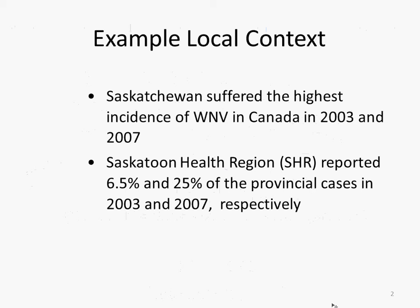West Nile is a potentially fatal infection that occurs worldwide. It started in Africa with a less severe strain, but was brought over to the United States — it seems through a zoo in the late 1990s. It then started to spread because mosquitoes were picking it up and spreading it to other animals as well as spreading it to humans.